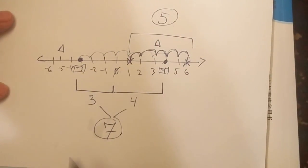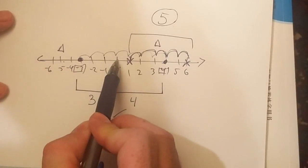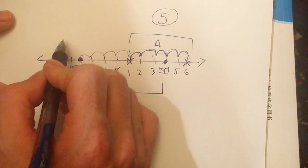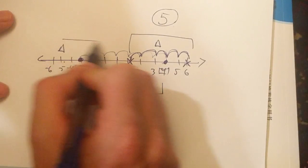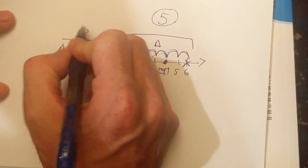Well, what's the distance from negative five to zero? The absolute value, the distance from negative five all the way to zero, is, of course, five.